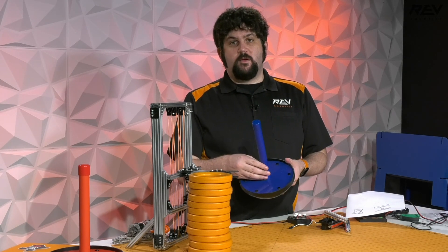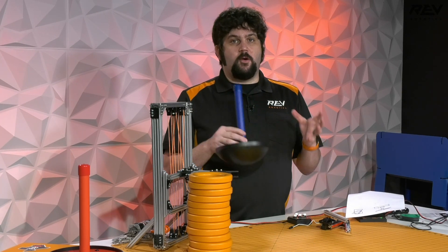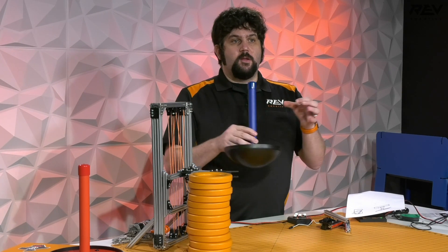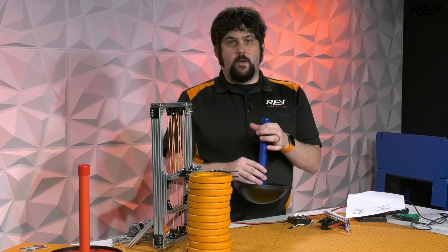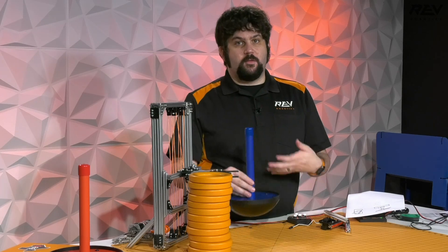The nice thing about the rules this year is it allows you to hold one of these before the match starts, meaning that all you have to do is make something that you could latch onto this on your robot and you can let it go during autonomous mode, and there are some other simple ways to manipulate this.